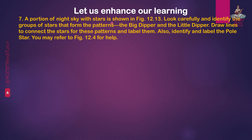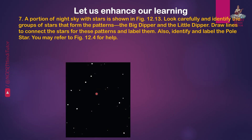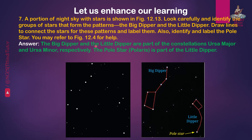Question 7: A portion of night sky with stars is shown in figure 12.13. Look carefully and identify the groups of stars that form the patterns — the Big Dipper and the Little Dipper. Draw lines to connect the stars for these patterns and label them. Also identify and label the pole star. You may refer to figure 12.4 for help. The Big Dipper and the Little Dipper are part of the constellations Ursa Major and Ursa Minor respectively. The pole star Polaris is part of the Little Dipper. This is the Little Dipper, this is the pole star, and this is the Big Dipper.